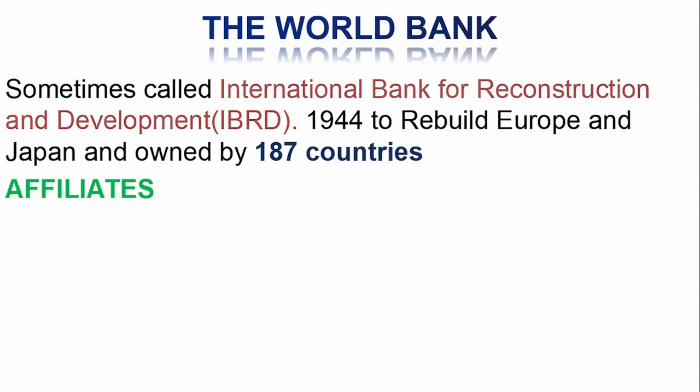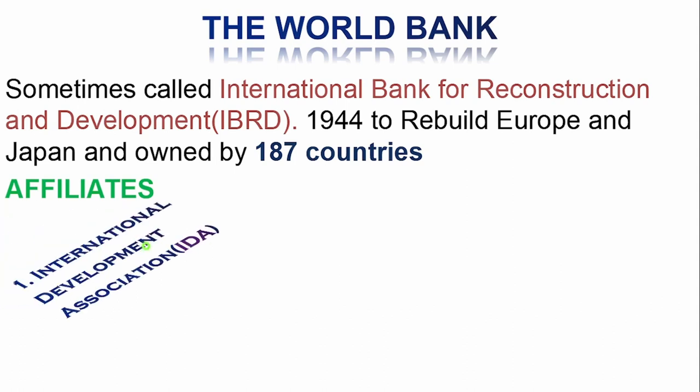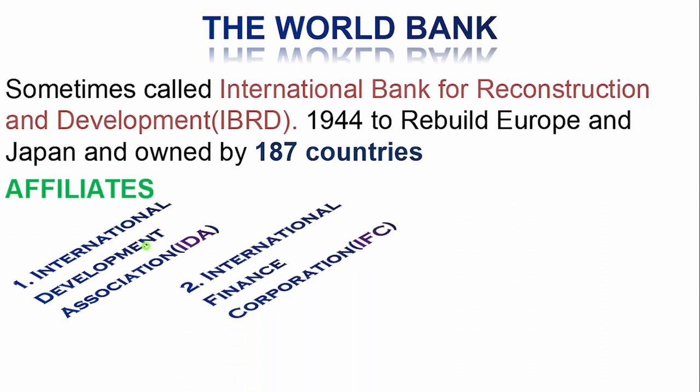The World Bank has four affiliates. First, we have the International Development Association, IDA. The work of the IDA is to lend to low-income countries. Then we also have the International Finance Corporation, the IFC, which lends to the private sector of these countries.